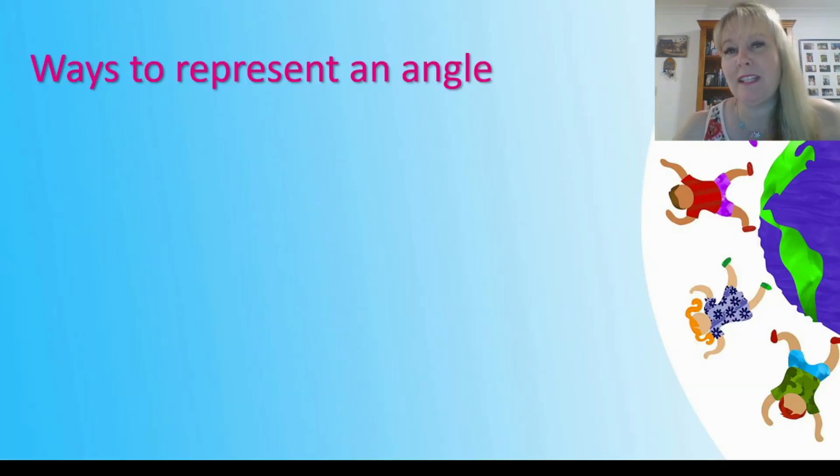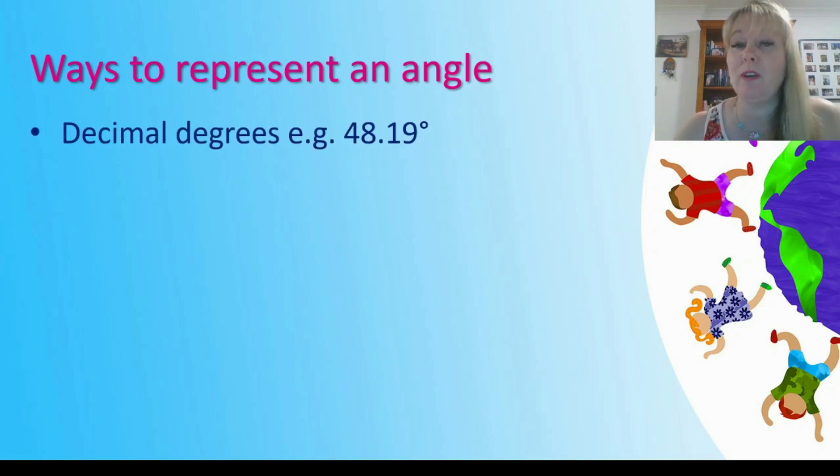So firstly let's talk about different ways that we can represent an angle. You'll be very familiar with decimal degrees such as 48.19 degrees. This is how we represent different types of angles when we look at earth geometry, our angles of latitude and longitude.